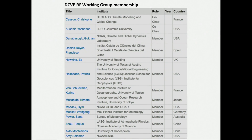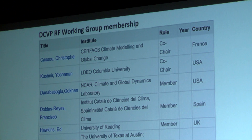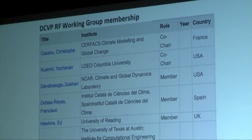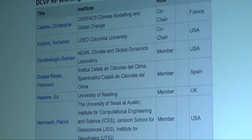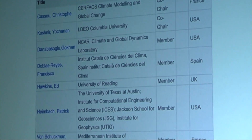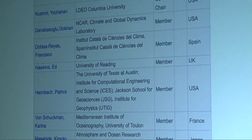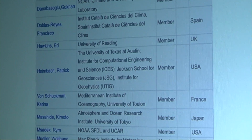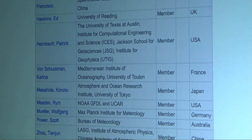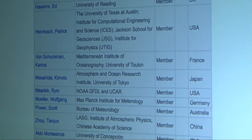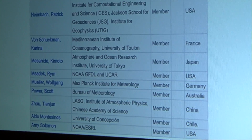This is the working group, and if you look through the names you will see there is a big overlap between DCPP and DCVP already in the membership of the group. The names include people who are interested in the problem of decadal variability and are actively dealing with the problem, either through observations, analysis, or modeling.